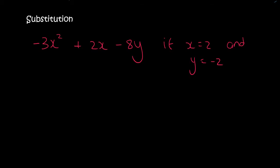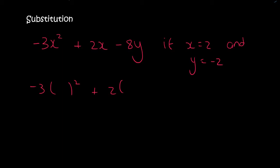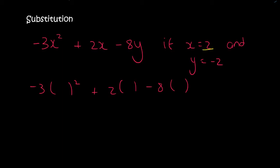Here's another one. So all you do is you write everything down. You open up brackets wherever you see an x and a y, but you don't change anything else. If you do it like that, you will get this correct. Now x is 2, so wherever there was an x, you just replace it with a 2, and y is minus 2.